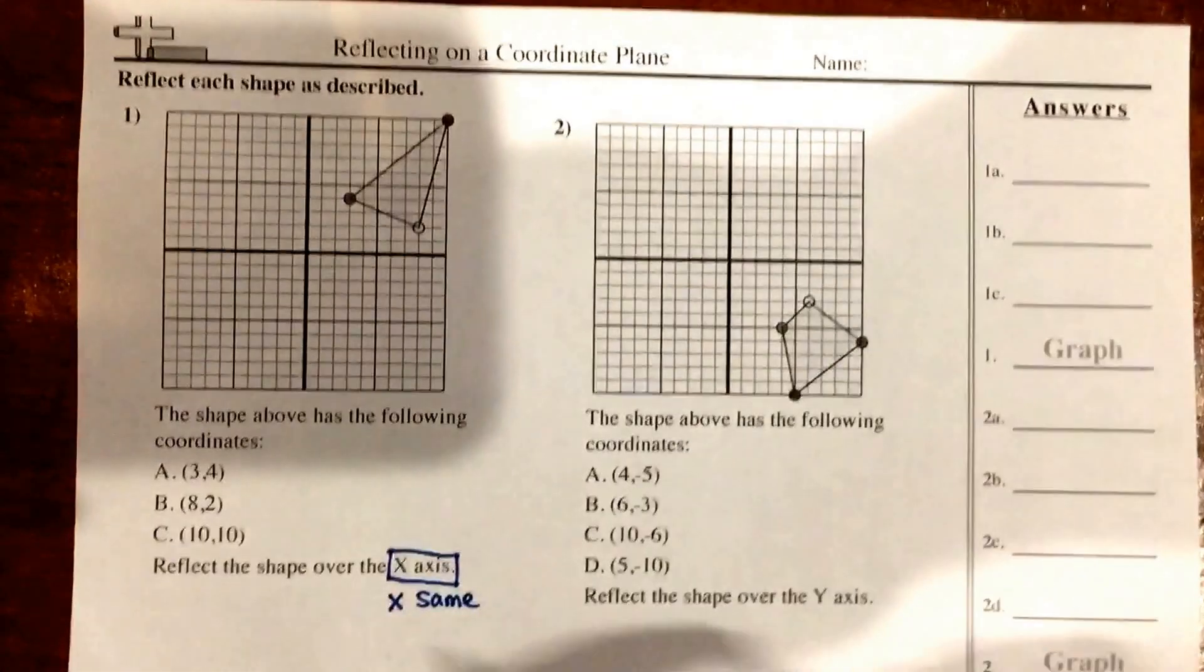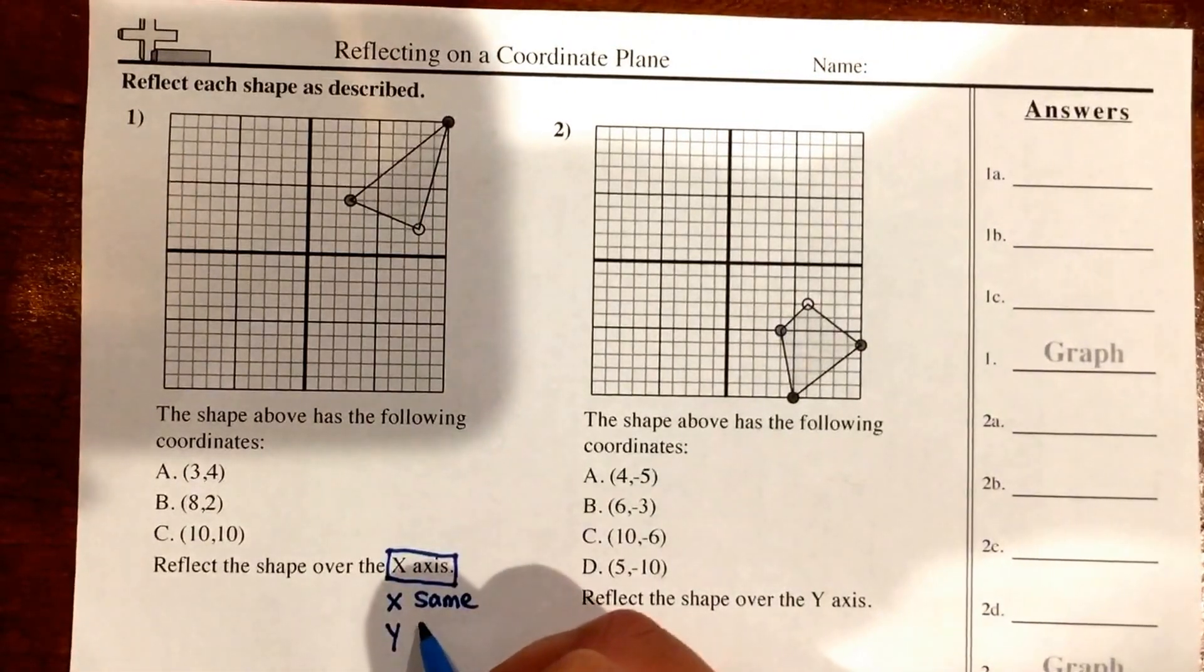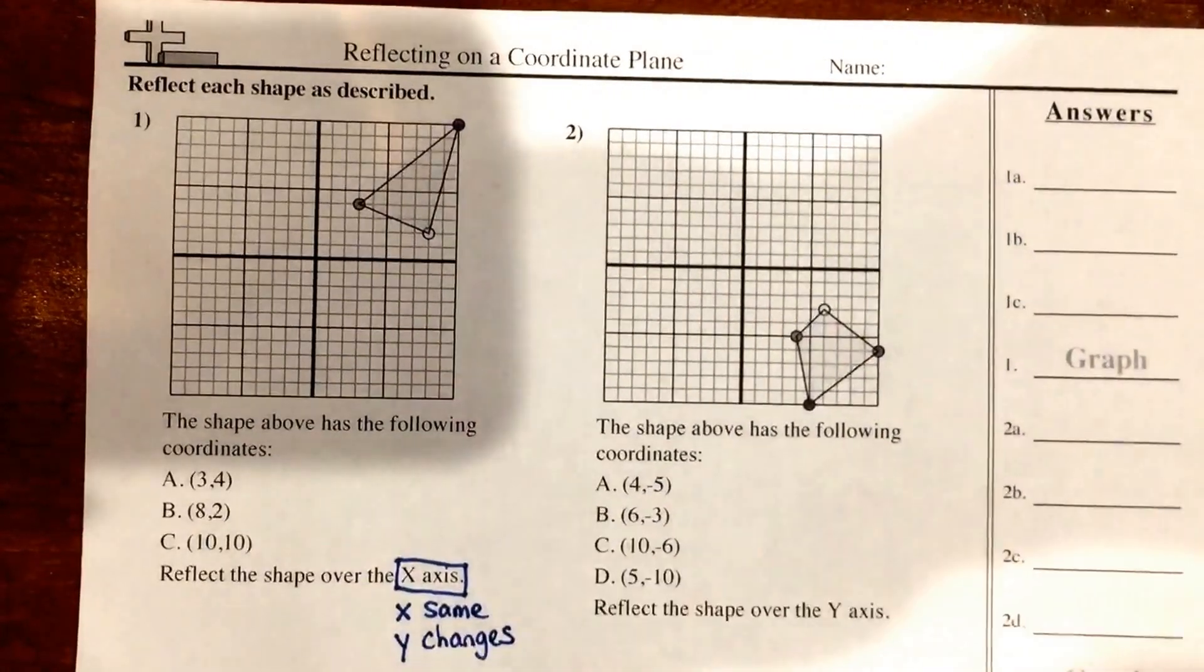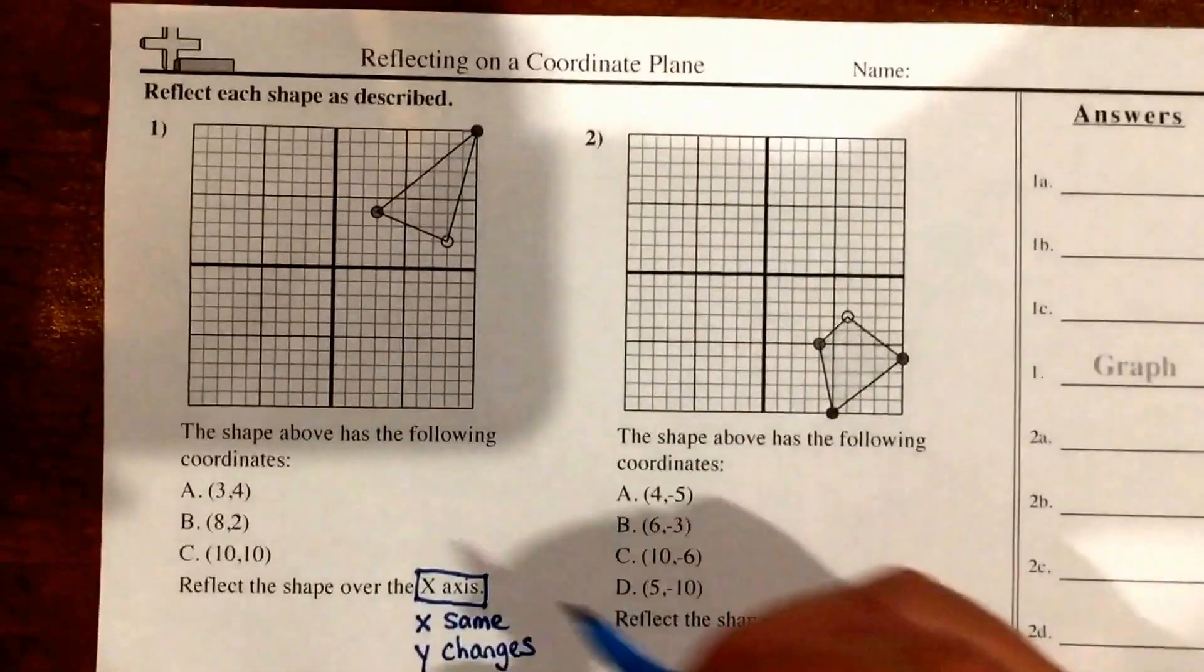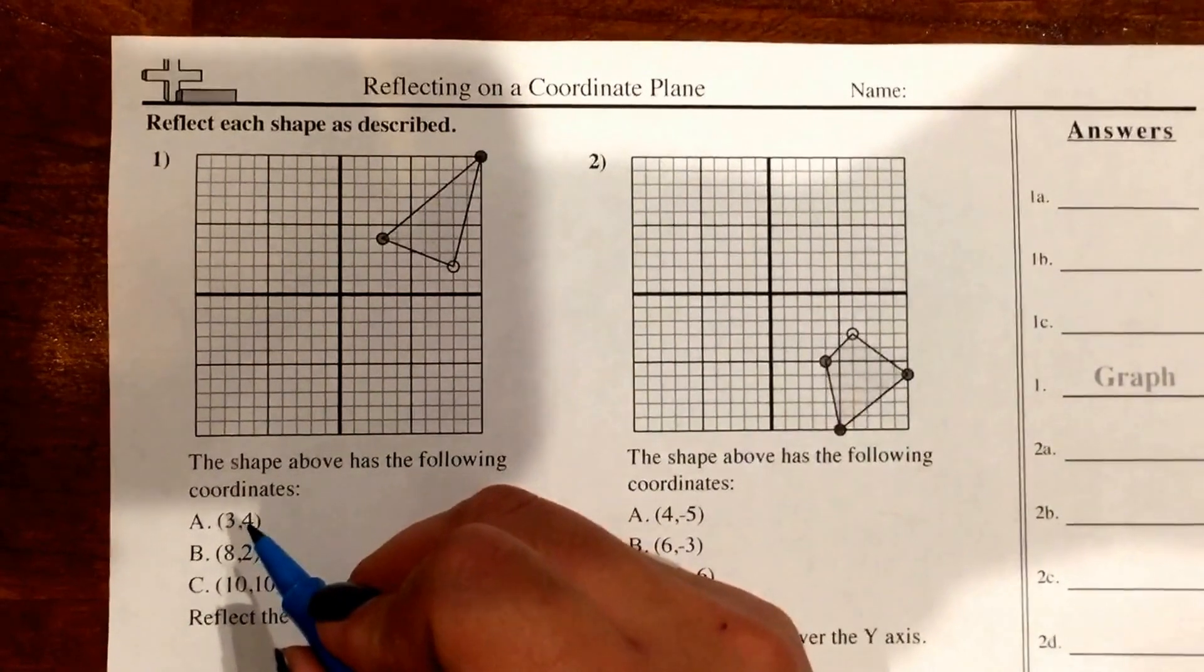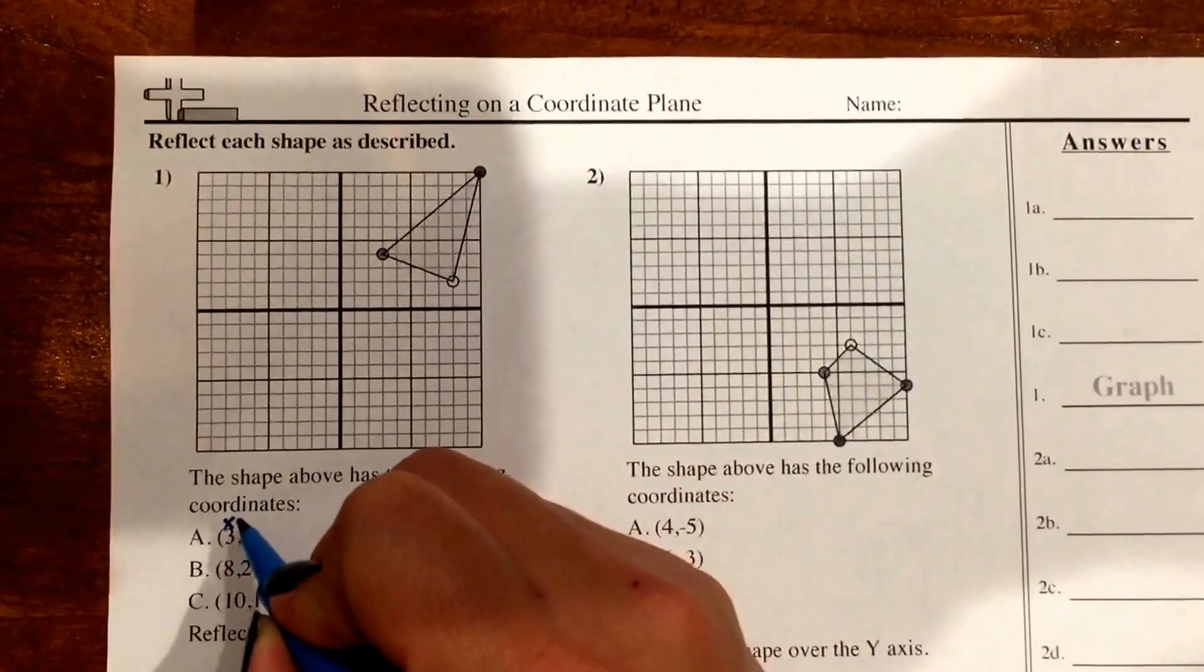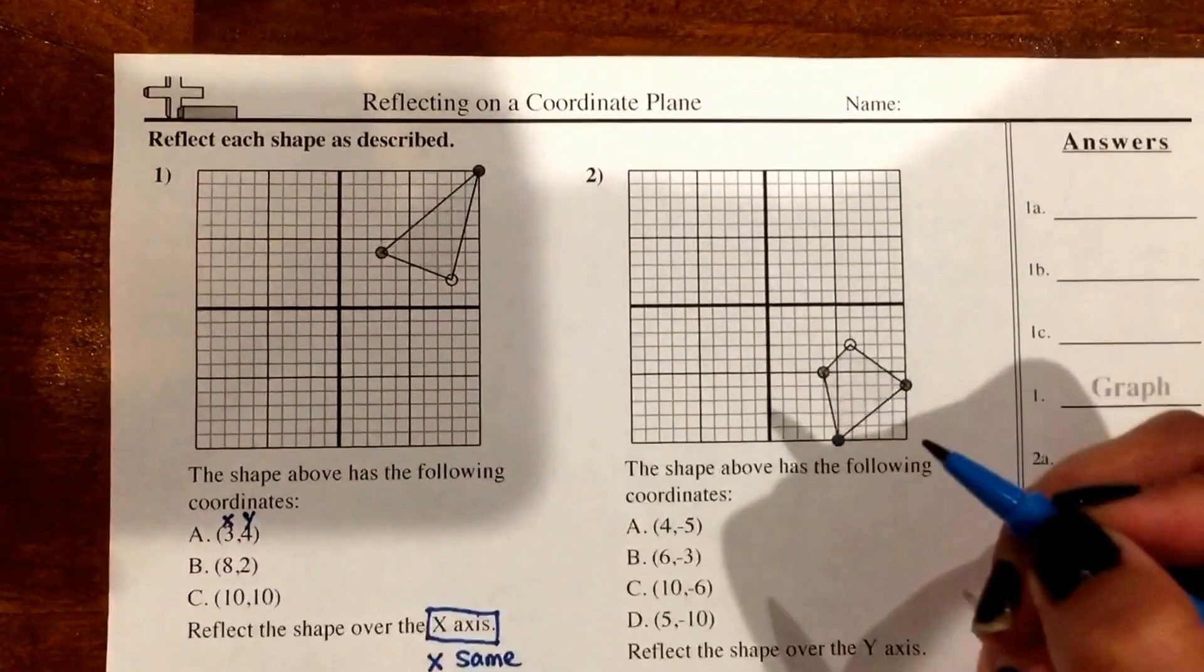Also, when you reflect over the x-axis, your y-coordinate changes. So let's take a look at the points. If I look at point A, it's (3, 4). I know that the 3 is my x-coordinate, and I know that the 4 is my y-coordinate.